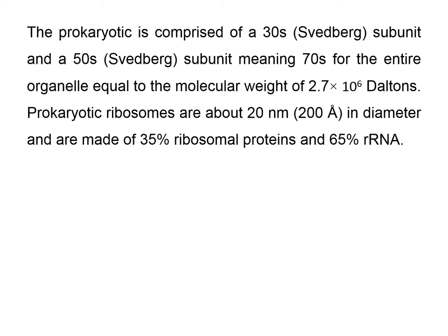Prokaryotic ribosomes are about 20 nanometers in diameter and are made of 35% ribosomal proteins and 65% RNA. That means the ribosome is composed of roughly one-third protein and two-thirds RNA.